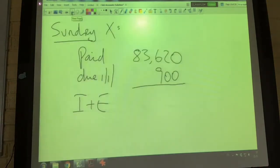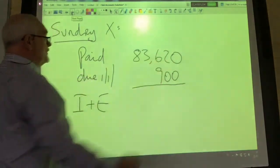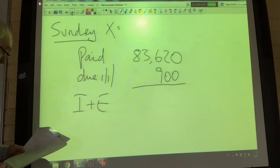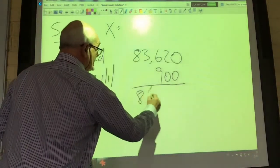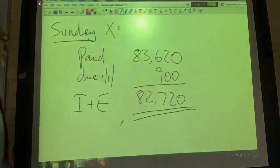We then have some sundry expenses. During the year we paid 83,620 euro. But remember at the start of the year we owed 900 euro. So the charge for this year is 82,720, which we put into our expenditure account.